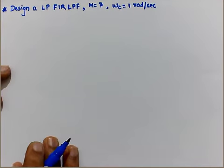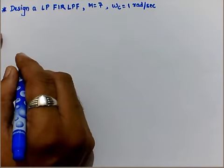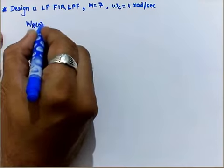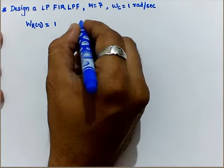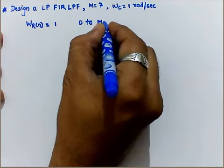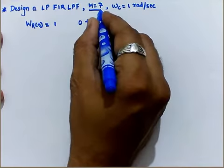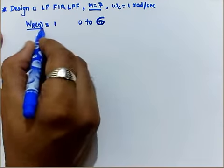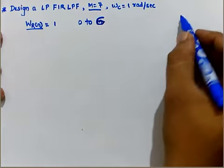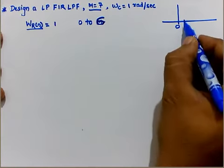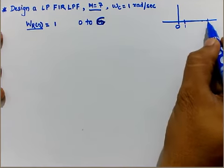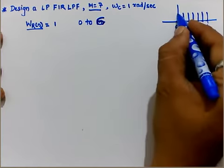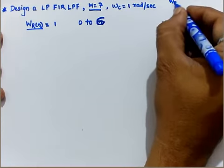For the rectangular window function, we already know the criteria: W_R[n] = 1 for n = 0 to M-1. Right now for our case M is 7, so W_R[n] = 1 for n = 0 to 6. In a diagrammatic manner, at n = 0, 1, 2, 3, 4, 5, 6 the amplitudes are all 1. This is our W_R[n].